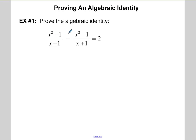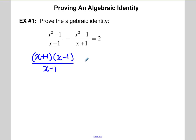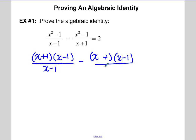First we're going to start off with proving an algebraic identity. You notice that they have different denominators, so to combine like terms you would want to get both sides having a common denominator. I'm also using the idea of factoring the numerator — by factoring the numerator on both sides, you can see we can eliminate the denominator in both cases. So you have x plus 1 and x minus 1, since these are the difference of two squares, and we want to know if it's equal to 2.